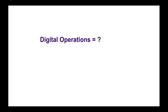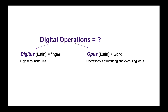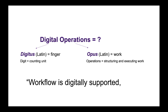What do we mean by digital operations? The word digital derives from the Latin word digitus, which means finger. So digital now means anything that is countable or quantified in bits and bytes. The word operations also derives from the Latin word opus, meaning work. So let's think of digital operations as meaning that the workflow is digitally supported if not fully executed. Supporting means enabling and facilitating human execution, while digitally executed means automated.